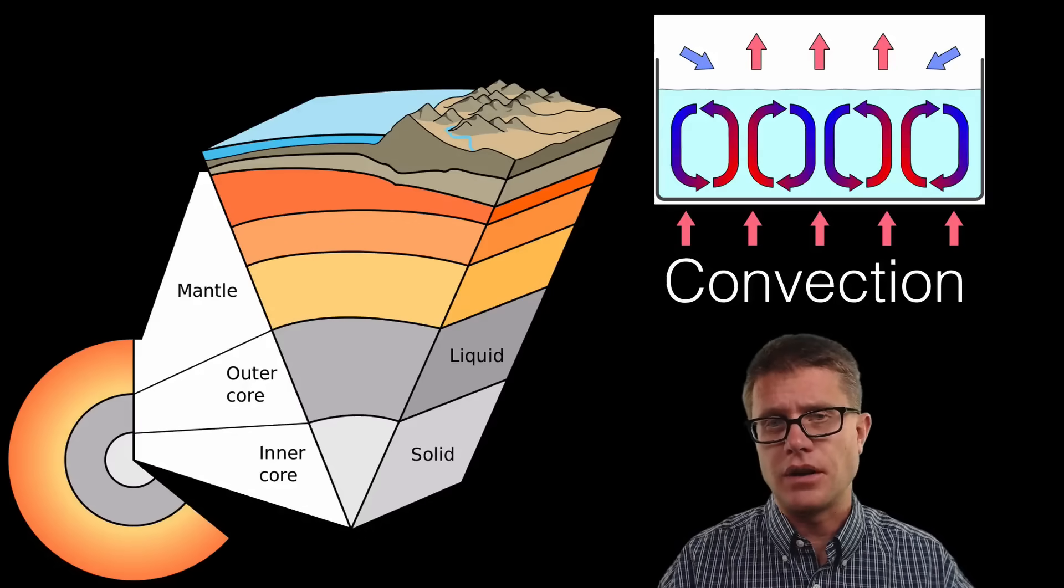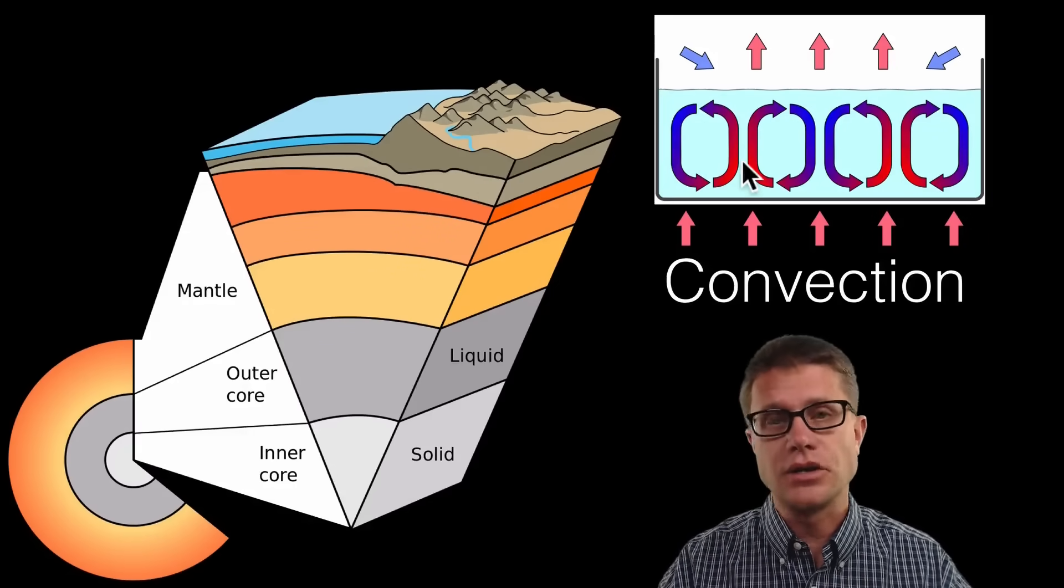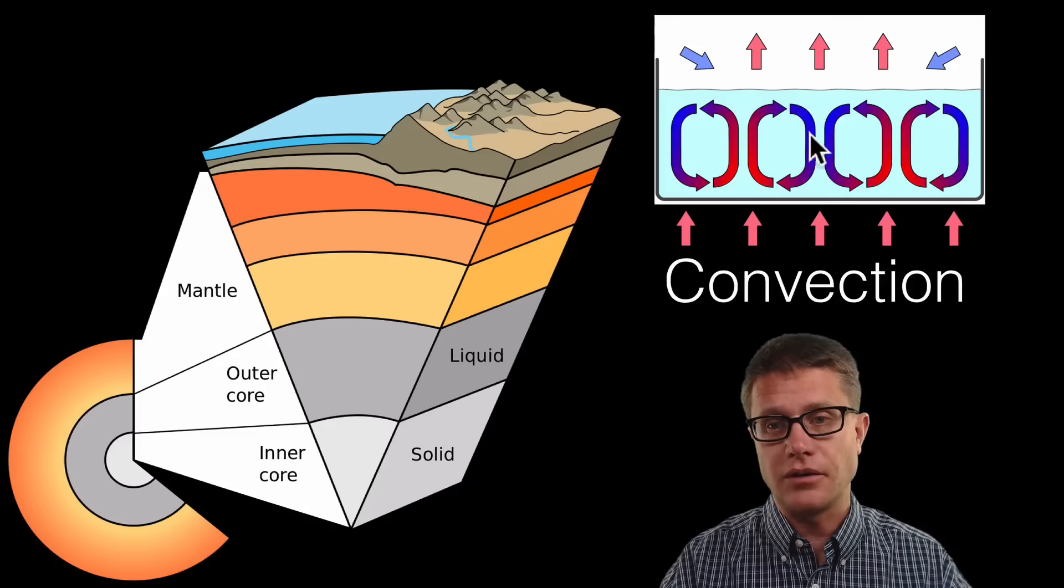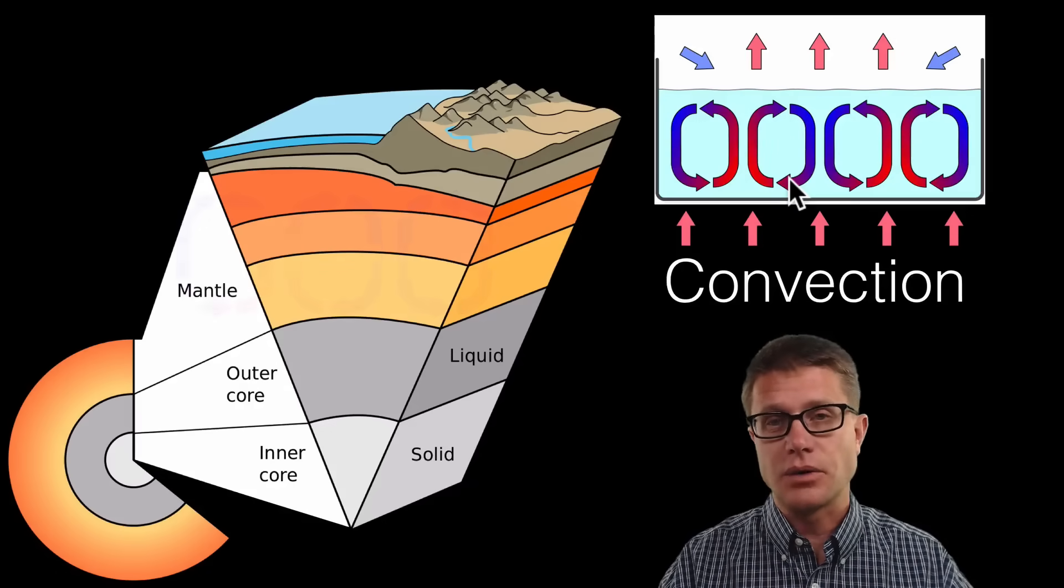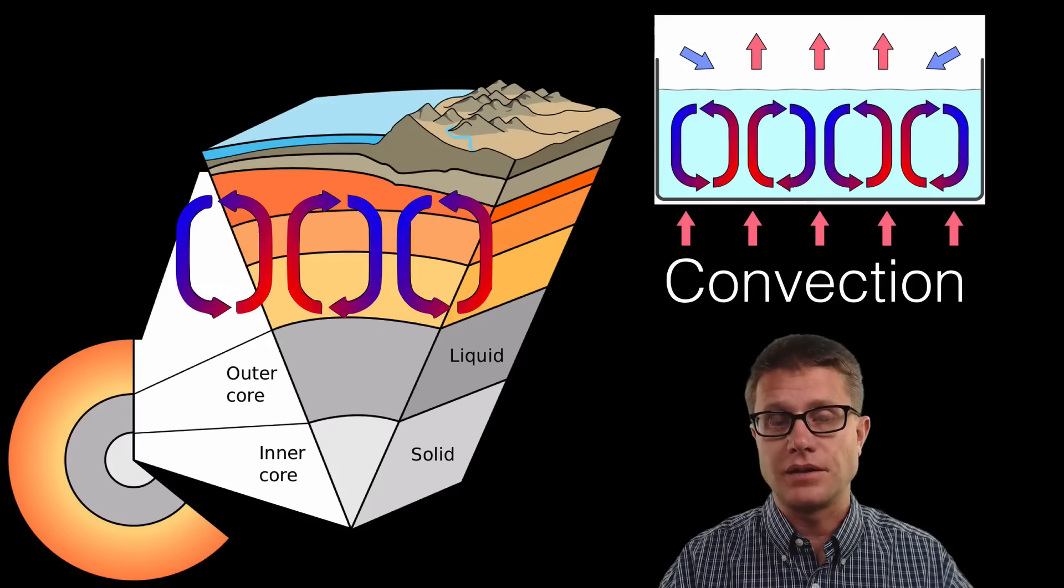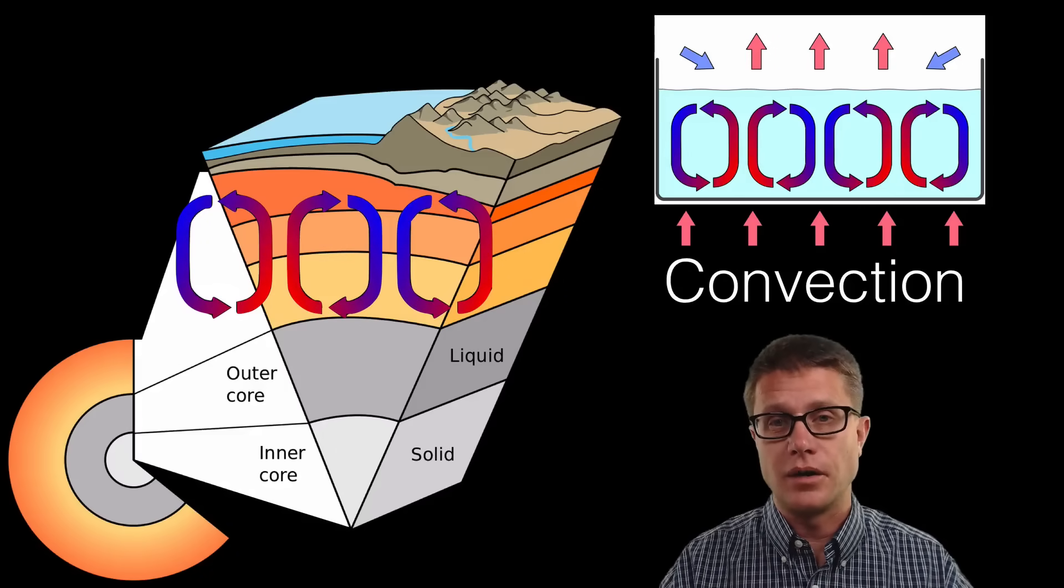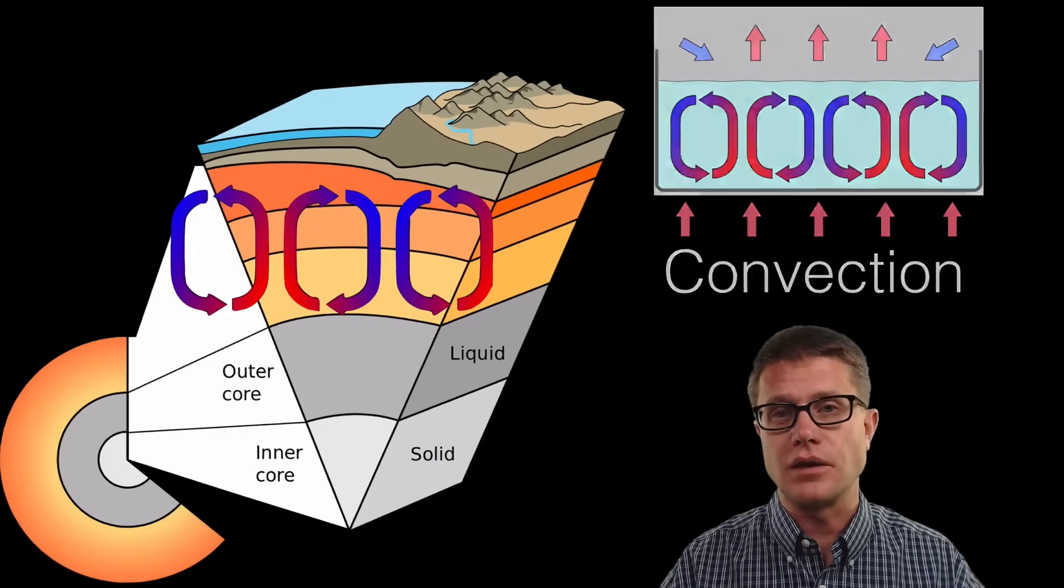But if we look inside the water itself we are going to have these convection currents. Areas where we are heating it up. And so we are decreasing the density and then it cools down and then it is going to sink again. And so we are going to find the same thing in the mantle itself. It does not occur as quickly as it does in the boiling water, but it has huge implications on the crust above.